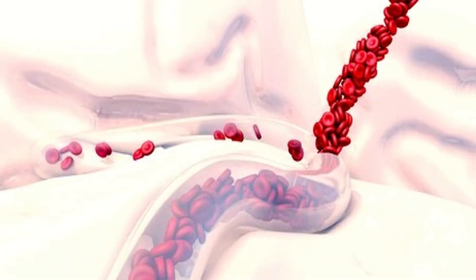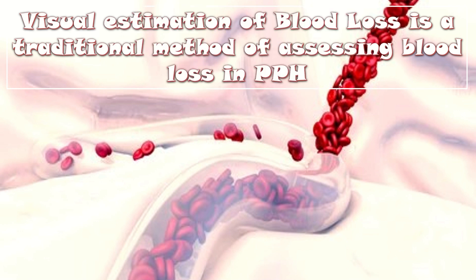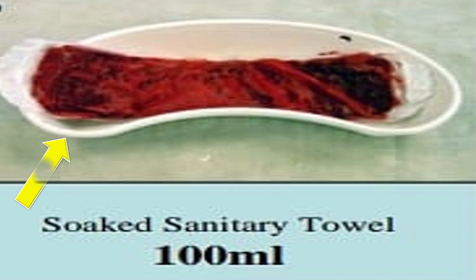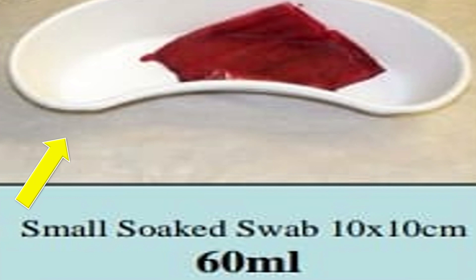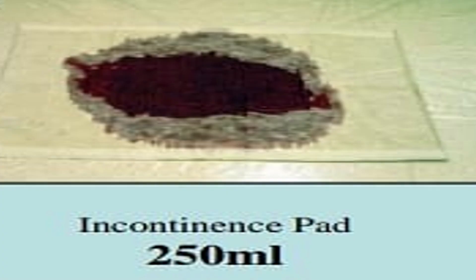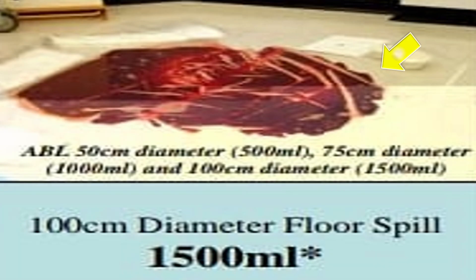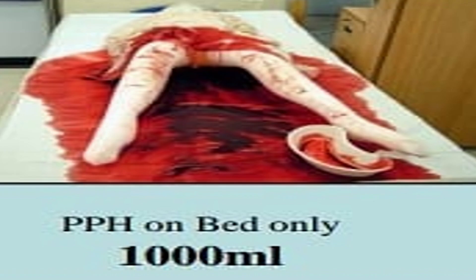As far as visual estimation of blood loss is concerned, it is a traditional method of assessing blood loss in PPH. A soiled sanitary towel indicates 30 ml of blood loss, a soaked sanitary towel indicates 100 ml, a small soaked swab of 10x10 cm shows 60 ml, a continuous pad shows 250 ml, and a large soaked swab of 45x45 cm shows 350 ml.